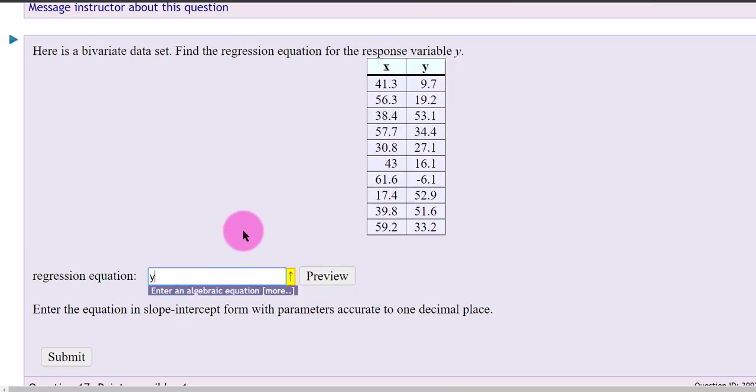So y equals negative 0.758 times x, and the intercept was positive 62.9. The instructions indicate to round to one decimal place. The 62.9 appears okay, but I should report this to 0.8.